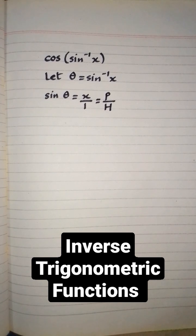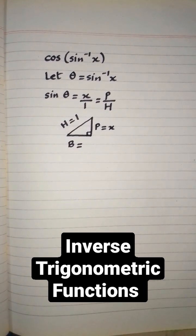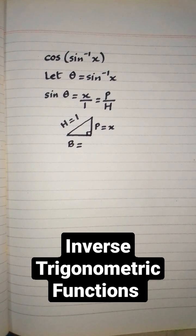But sine theta is equal to perpendicular upon hypotenuse. So we can draw a right angle triangle in which perpendicular is x and hypotenuse is 1.